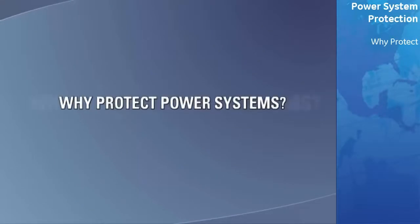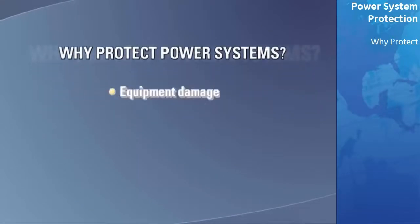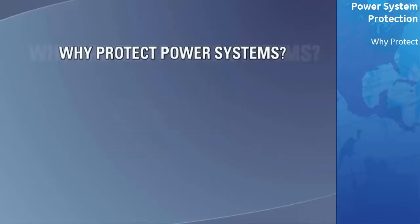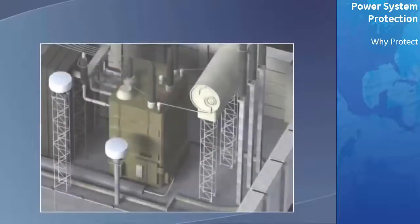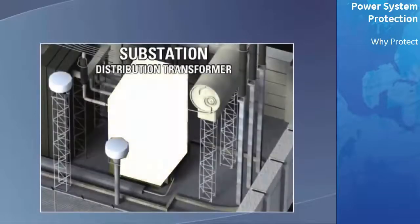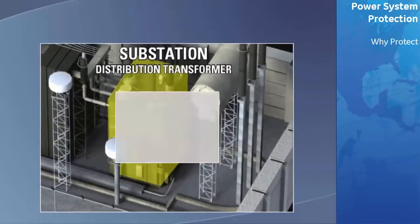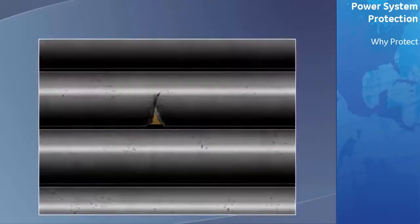The potential costs due to equipment damage, interruption of power, and associated safety issues give a high priority to protection. For example, if a small section of aging insulation in a large distribution transformer fails, high levels of fault current will flow.